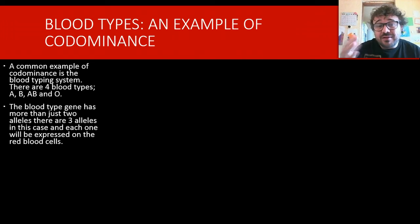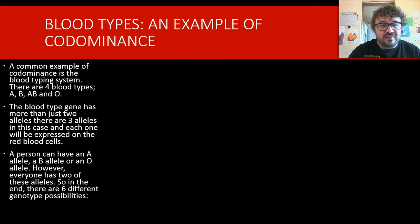Okay, so, the blood type gene has three alleles. So, it's another step up in complication. And basically, it controls what type of antigens are on the outside of blood cells. So, you can have an A allele, a B allele, or an O allele.